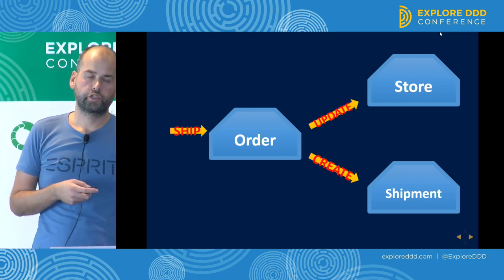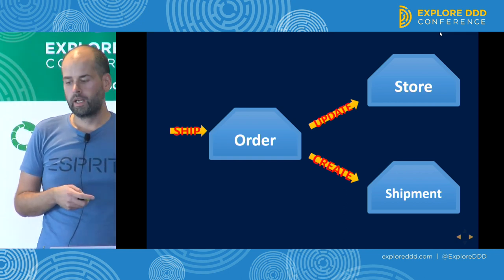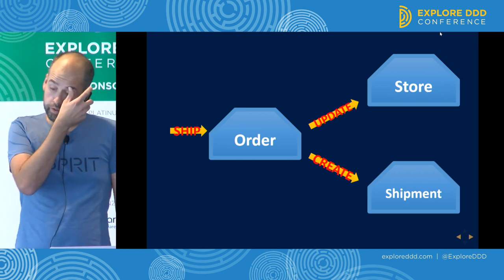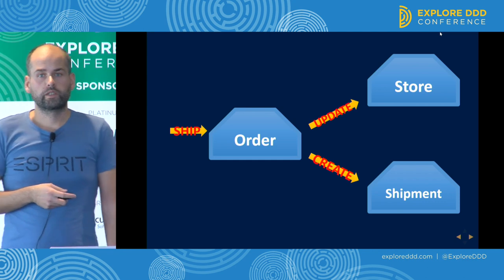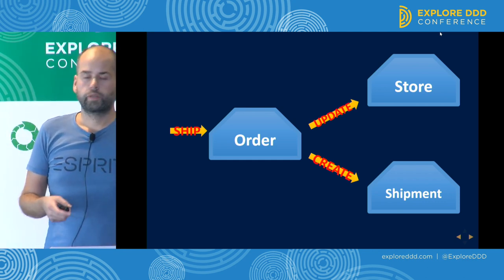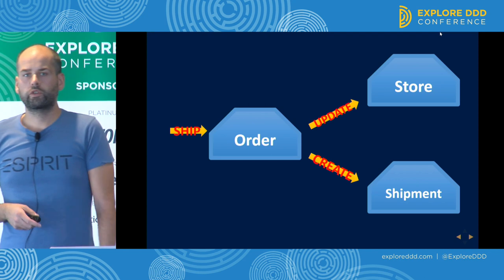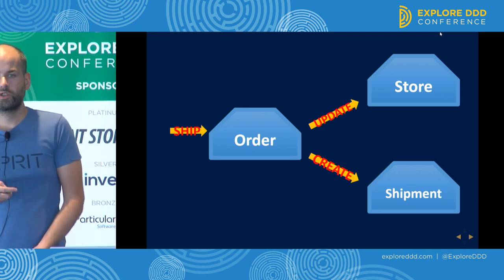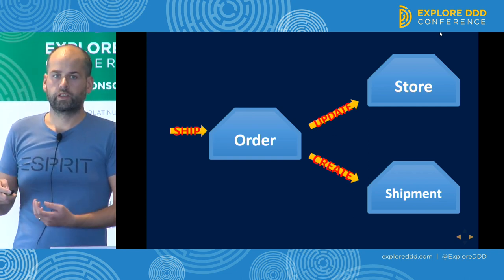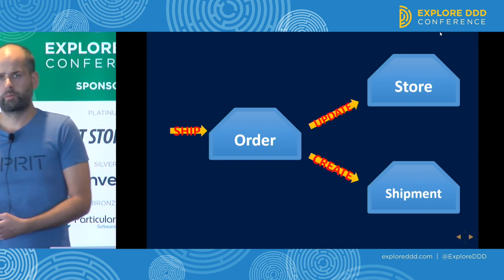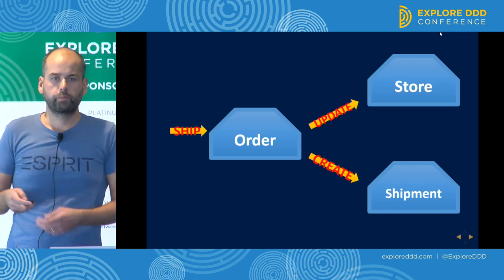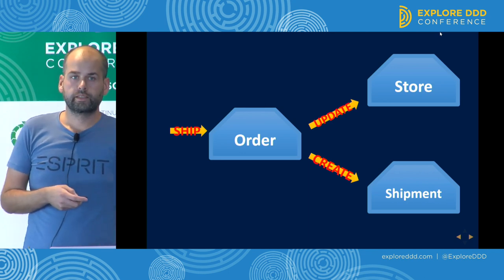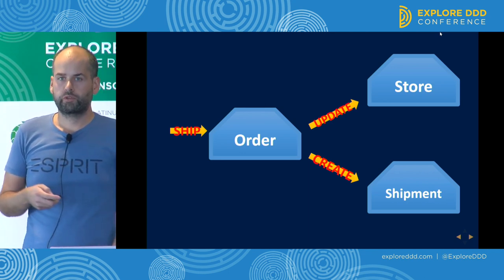You cannot implement complex business processes using a single aggregate. It just contains shipping information and shipping logic. But if you want to actually ship an order, that complex and long-lasting business process spans multiple aggregates. First, we need to send a command to the order aggregate. It does its own logic. Then we need to update some information in the store aggregate that represents a physical store or warehouse where pierogi are made and stored. And then we need to create a shipment aggregate.